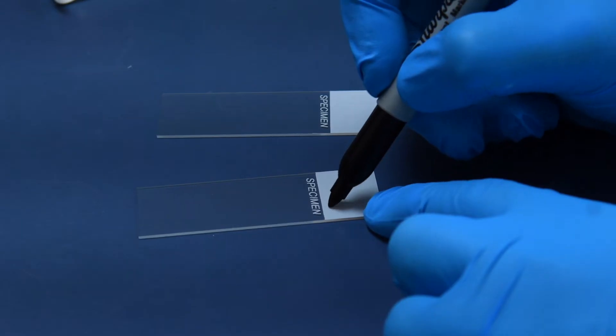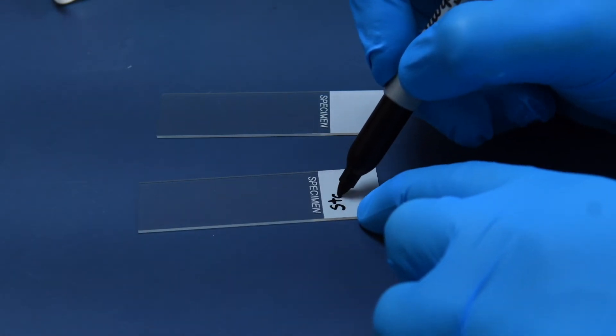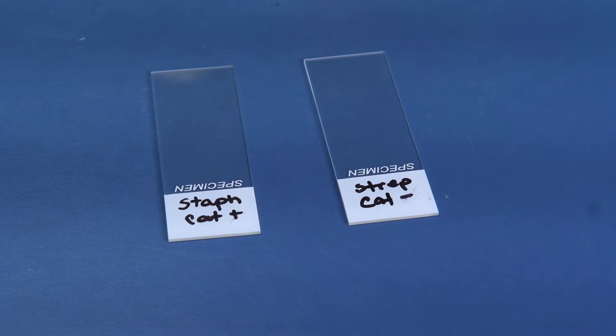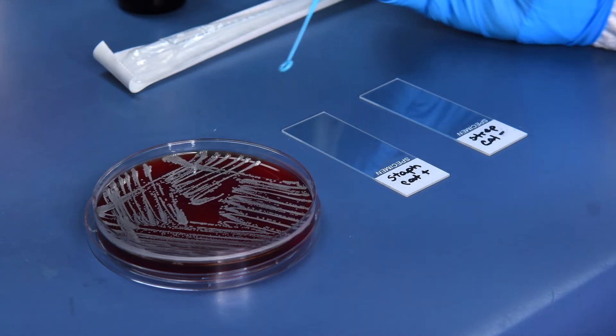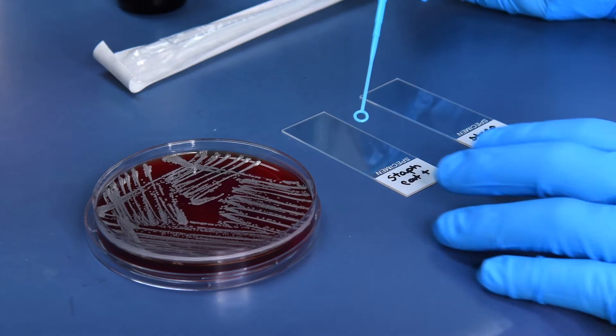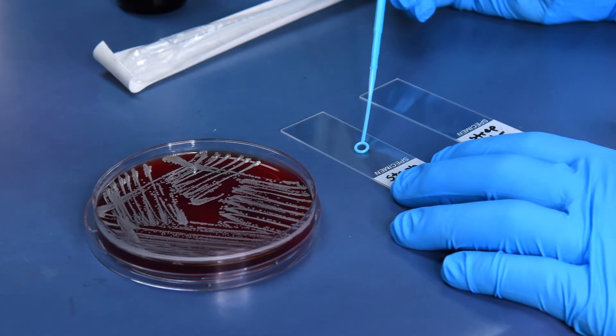Start by labeling your slides. Using your sterile inoculating loop, touch an isolated Staphylococcus colony, then smear the organism on a clean glass slide in one even layer.